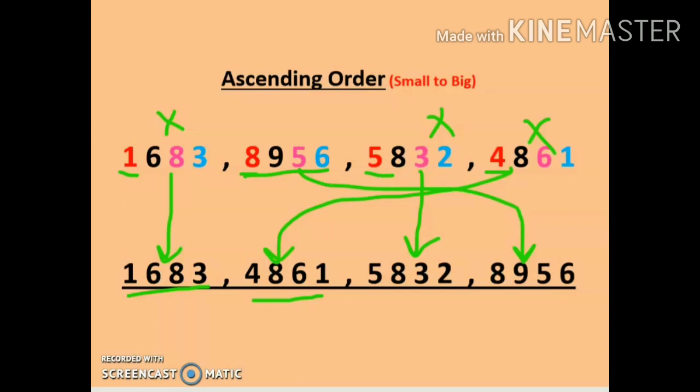Rule number 1: count the number of digits. If the number of digits are the same, then we compare the position — first thousands place, then hundreds place, then tens place, then ones place. If thousands place digits are the same, we consider hundreds place, then tens, then ones. The number with the least digits will be the smallest number.